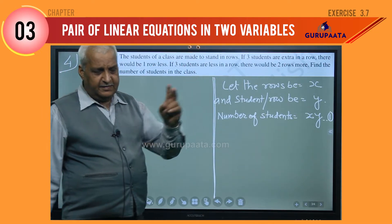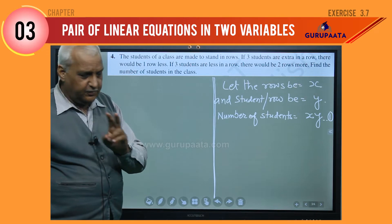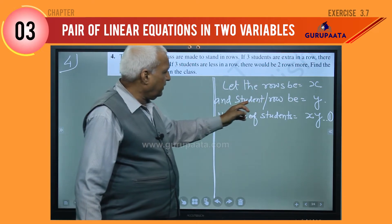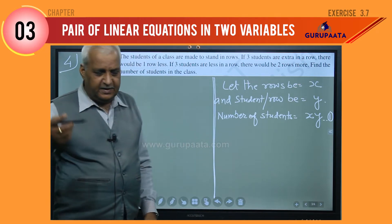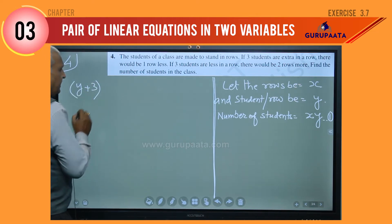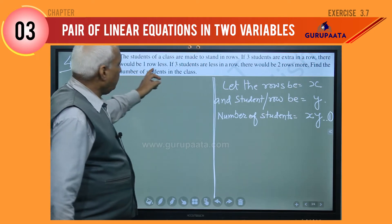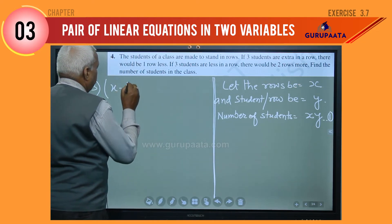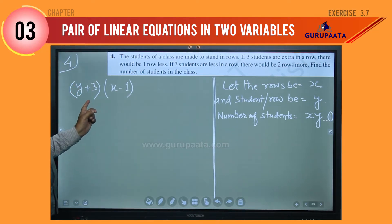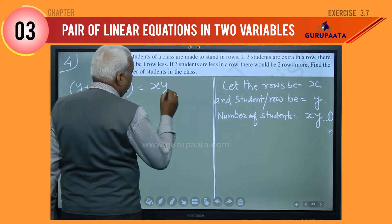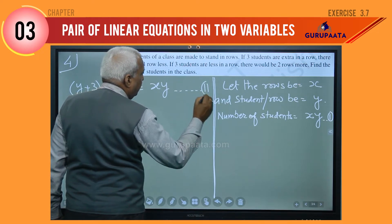We will use the two conditions to obtain two equations. The first condition: if three students are extra in a row, students per row increase by 3, so we write y plus 3. Then there would be one row less, so rows become x minus 1. Rows multiplied by students per row gives x·y, since total students are the same. Let this be equation number two.